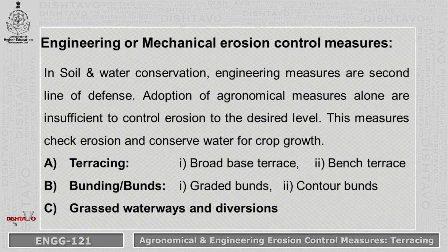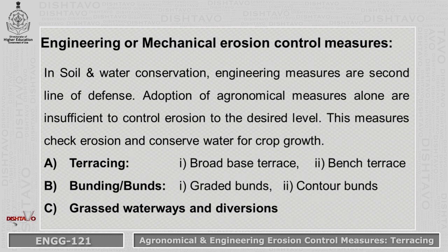Engineering or Mechanical Erosion Control Measures — as we discussed in module 5 about Agronomical Erosion Control Measures — in this module we'll discuss Engineering Erosion Control Measures. These are the second line of defense; the first line of defense is the Agronomical Erosion Control Measures. Since adoption of agronomical measures alone is not sufficient to control erosion at the desired level, we have to go for Engineering Erosion Control Measures. These measures check erosion and conserve water for crop growth.